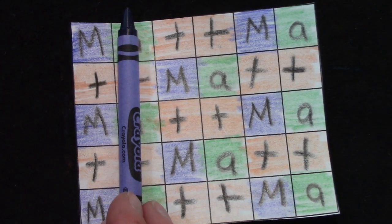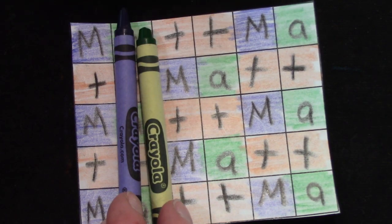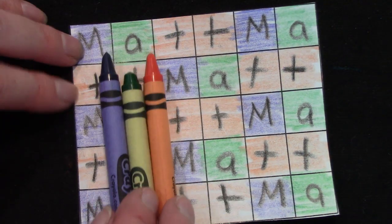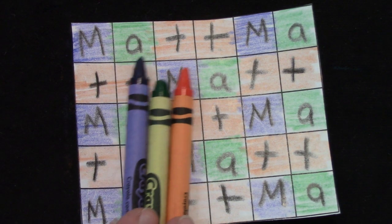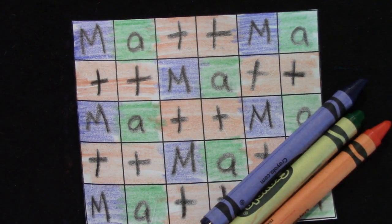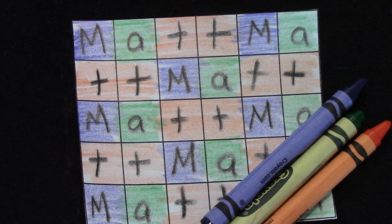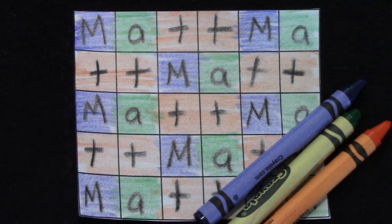My pattern was blue, green, and then orange for the M, A, and T's. I would like for you to write your name down and I would like for you to make a beautiful pattern. What do you notice about your pattern?